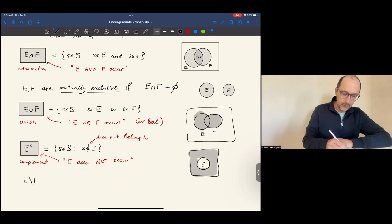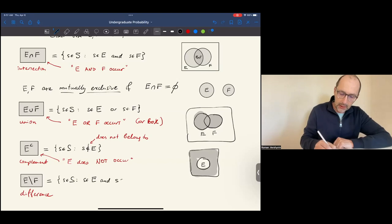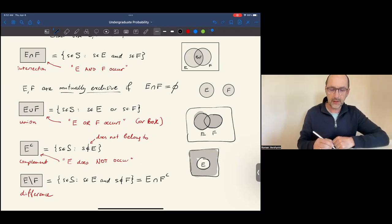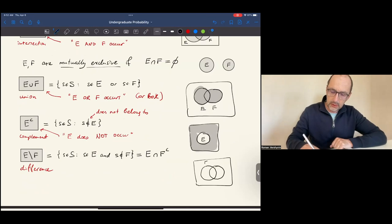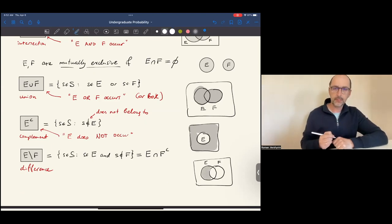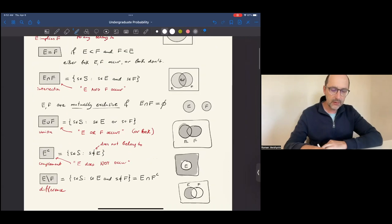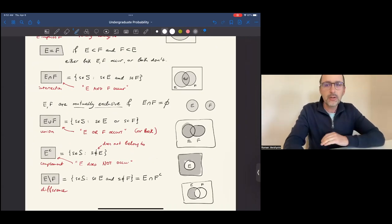The difference of the two events consists of all outcomes that are in E, but not in F. This can also be written as the intersection of E with the complement of F. So these are the outcomes that are in E and not in F. If this is E and this is F, then everything that's in E but not in F is the set difference. These are the basic set operations or operations on events.